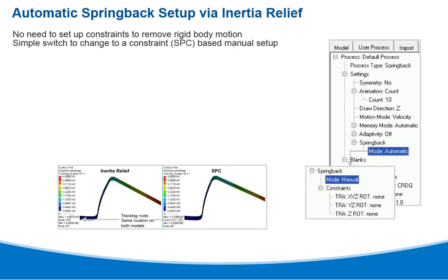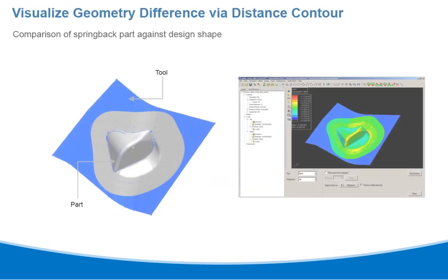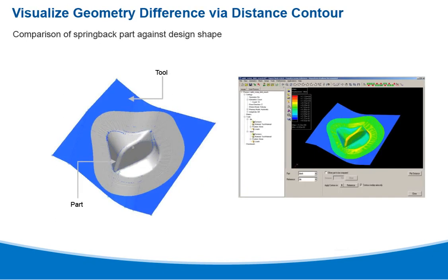For automatic spring back setup via inertia relief, there is no need to set up constraints to remove rigid body motion. There is also a simple switch to change to a constraint-based manual setup. Visual geometry difference via distance contour provides a comparison of the spring back part against the design shape.